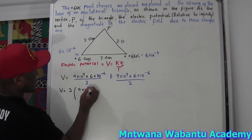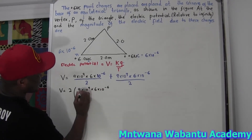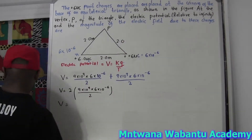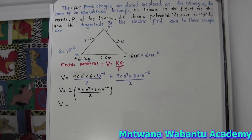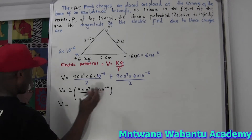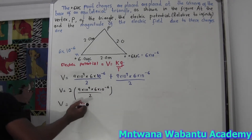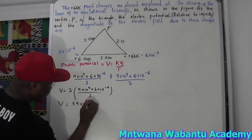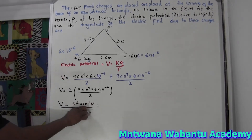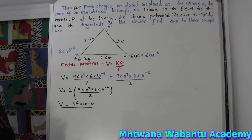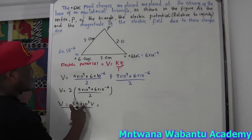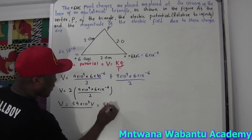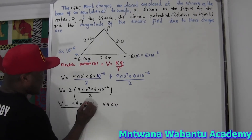So it's 2 × (9×10⁹ × 6×10⁻⁶ / 2). Plugging into the calculator gives 54×10³ volts. Since this is more than 1000, we convert to kilovolts by dividing by 1000, giving 54 kilovolts.